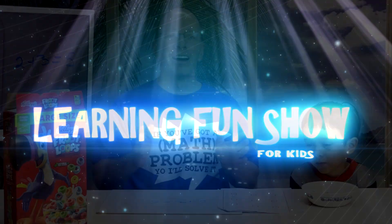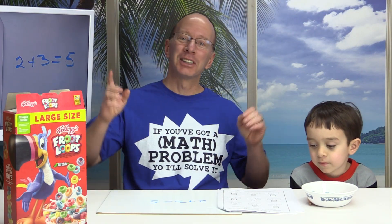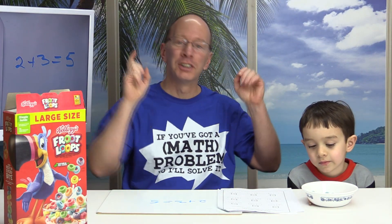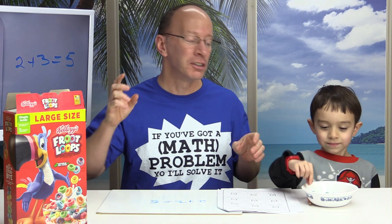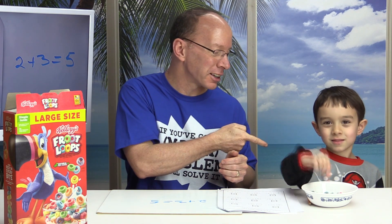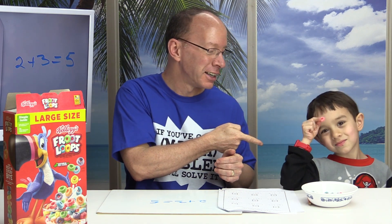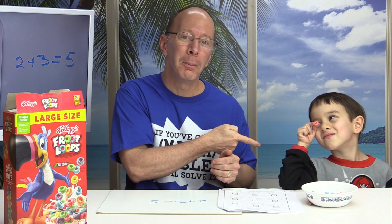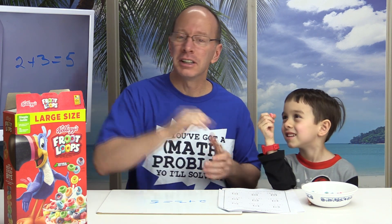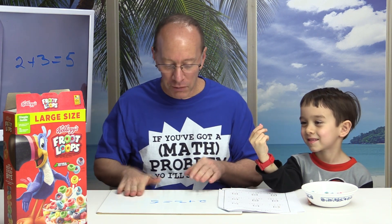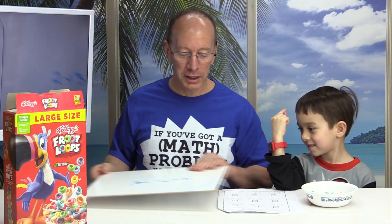All right, welcome back to the show. We are doing Number Bonds today, and we're using — what is it called? Manipulatives. Using Fruity Loops. First of all, I want to show you this problem right here.